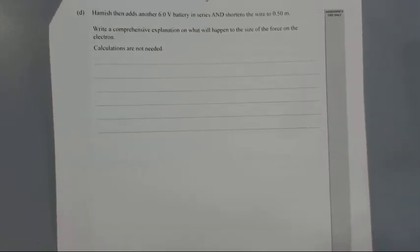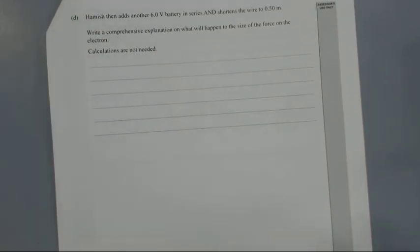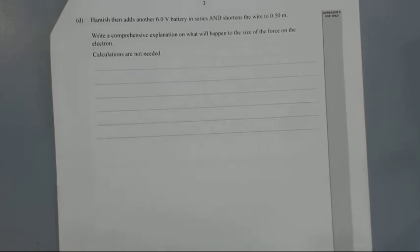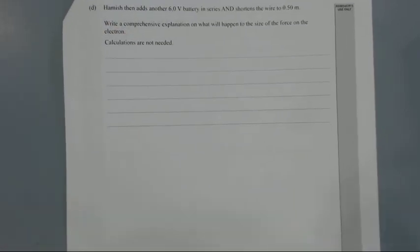Part D: Hamish then adds another 6 volt battery in series and shortens the wire to 0.5 meters. Write a comprehensive explanation on what will happen to the size of the force on the electron. Calculations are not needed, but you probably want to use formulas to support your answer. There's not enough writing space for an exam, this is 2015, you should have the whole page.